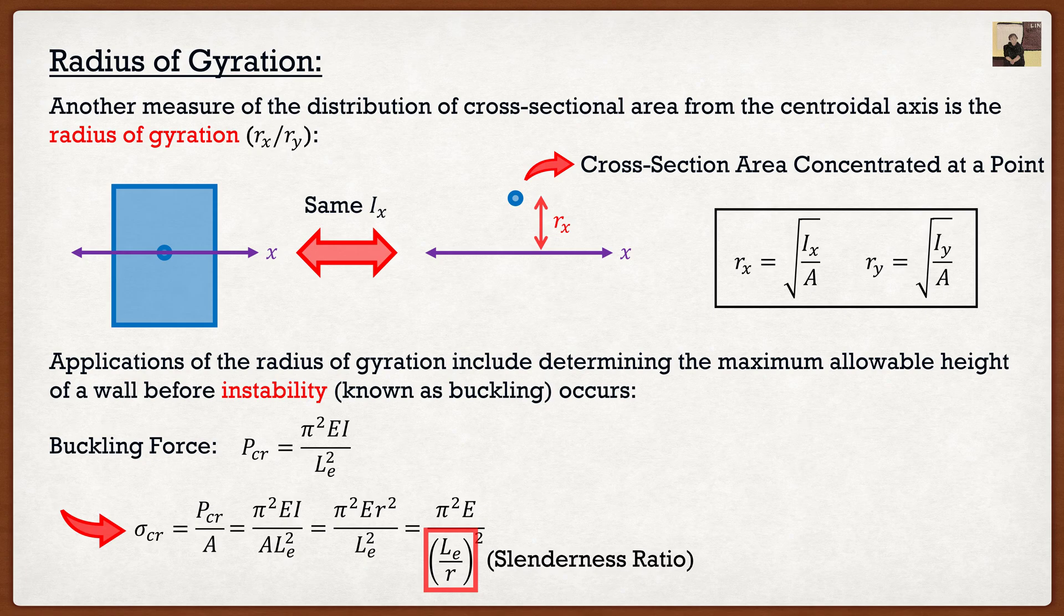So a lot of the codes will say, if you have a high slenderness ratio, which again is based on radius of gyration, you have to do a lot of very specific things when you design.